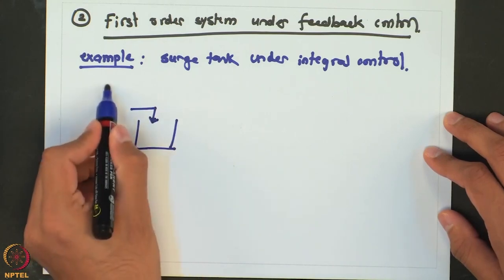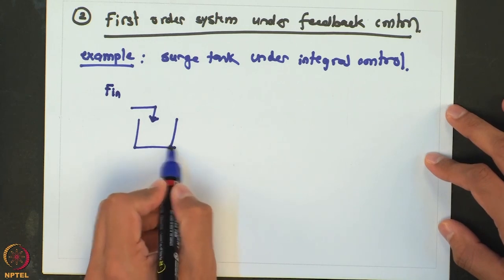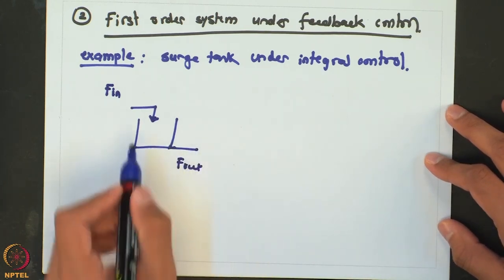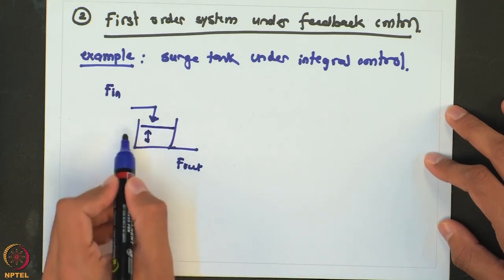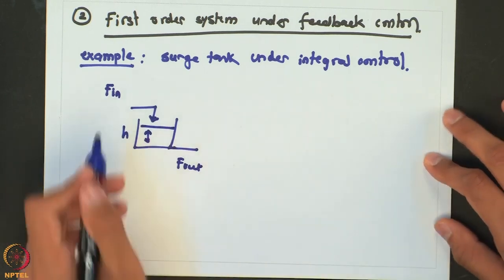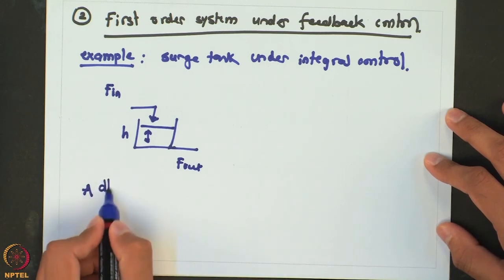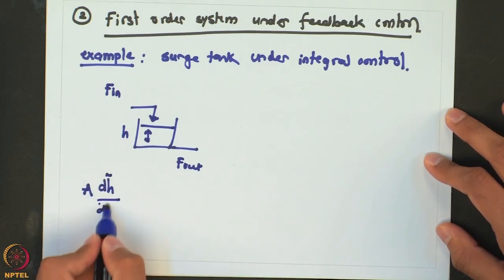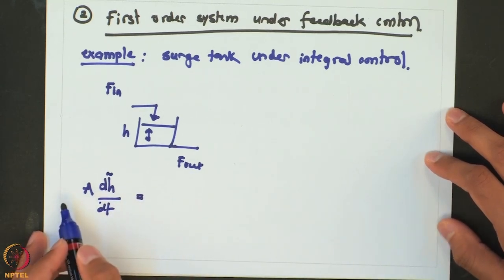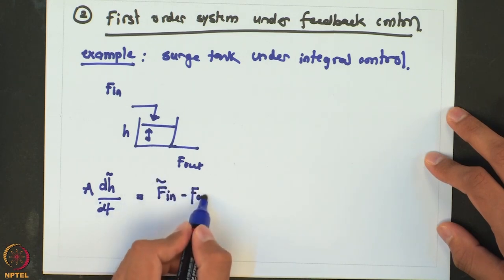The example we are going to consider is a surge tank under integral control. This is our surge tank where we have some feed flow coming in and we will have the outlet flow, and we want to control the level. The height dynamics or level dynamics of the system in deviation form can be written as A dh/dt = f_in_tilde minus f_out_tilde.